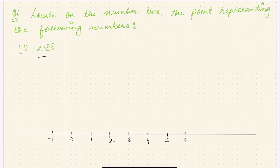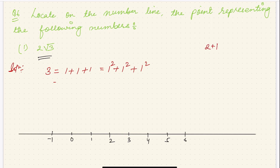Now we need to represent 2√3. I hope you know how to represent √3. Let us first represent √3. I can write down 3 as 2 plus 1, but 2 is not a square number. So I have to write 3 as 1² + 1² + 1², in terms of squares of numbers.